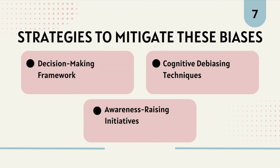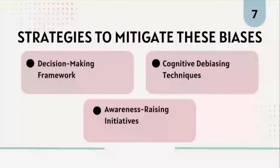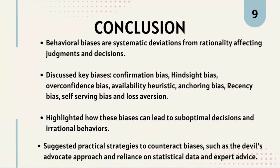In conclusion, behavioral biases are systematic deviations from rationality that affect individual judgments and decisions. We discussed key biases including confirmation bias, hindsight bias, overconfidence bias, availability heuristic, anchoring bias, recency bias, self-serving bias, and loss aversion. We highlighted how these biases can lead to suboptimal decisions and irrational behaviors, and suggested practical strategies to counteract them, such as the devil's advocate approach and reliance on statistical data and expert advice.